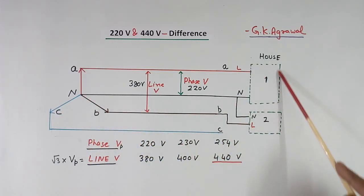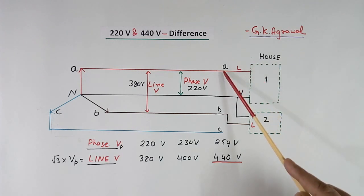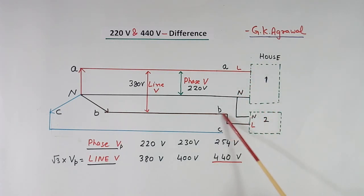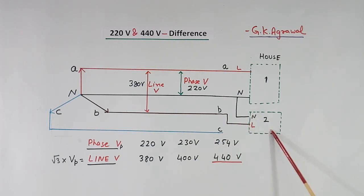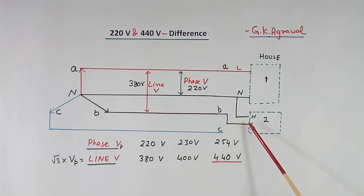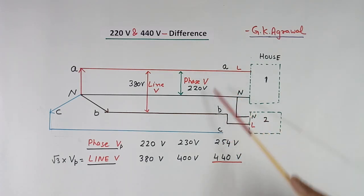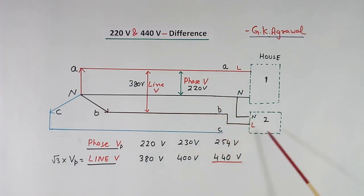In our houses, we get supply from line to neutral. It can be Line A, or Line B, or Line C. For example, house 2 gets supply from Line B and neutral. Similarly, Line C will go to some 3rd house. They distribute it such that the load is equal and balanced.